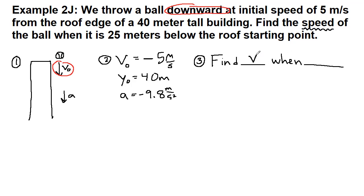So although speed and velocity are not the same, our equations will give us velocity, and speed just means we'll ignore the sign, when it is 25 meters below the roof edge.